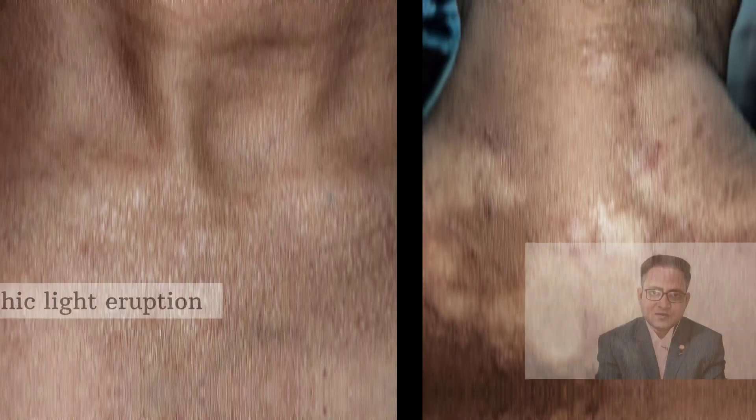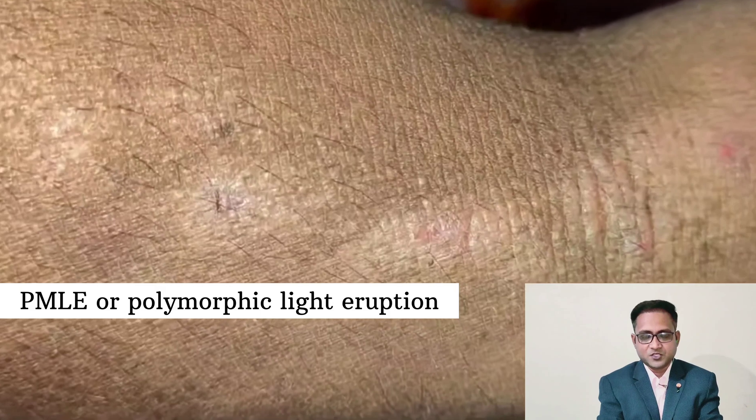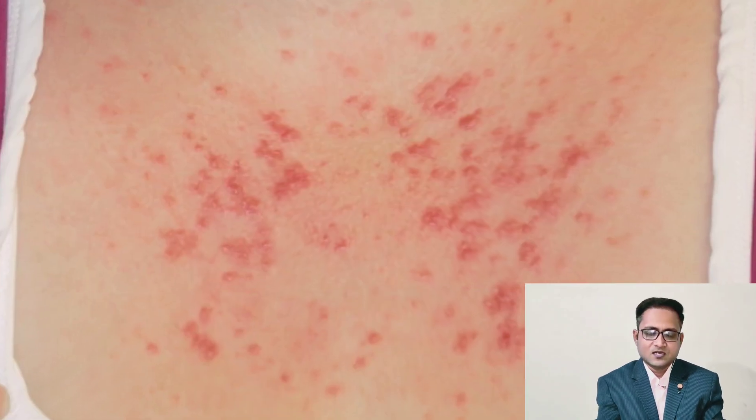Hello friends, today I am going to talk about PMLE or polymorphous light eruption. It is a type of photo-induced skin rash that generally occurs over sun-exposed areas of our skin after a certain period of intense exposure to sunlight.